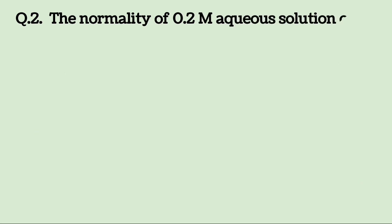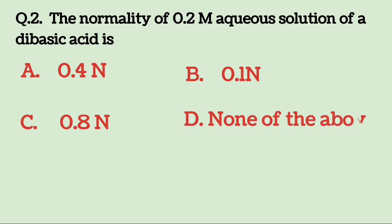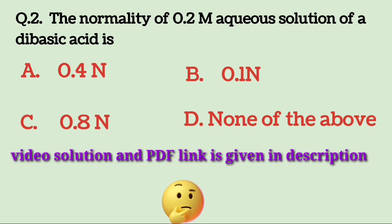The normality of 0.2M aqueous solution of a dibasic acid is: A. 0.4N, B. 0.1N, C. 0.8N, D. None of the above. Try to solve it. The answer is 0.4N.